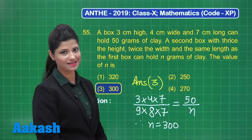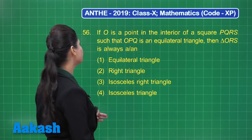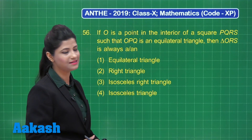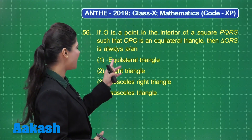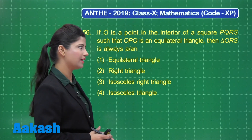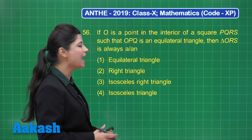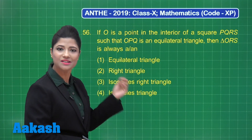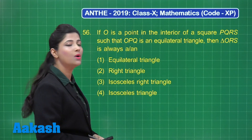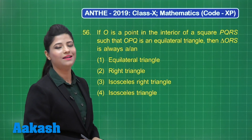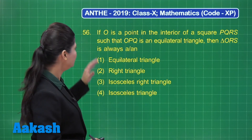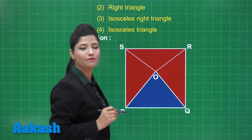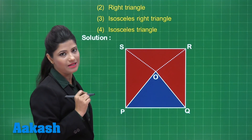Now let's take up question number 56. It states: if O is a point in the interior of a square PQRS such that triangle OPQ is an equilateral triangle, then triangle ORS is always which type of triangle? The options are: equilateral triangle, right triangle, right isosceles triangle, or isosceles triangle. Let us find the answer.